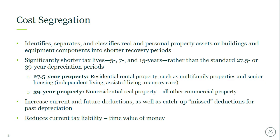Cost segregation studies are used to identify assets in a building that might qualify for shorter depreciable lives. They identify property that can be depreciated over 5, 7, or 15 years rather than the 27.5 years for residential property or 39 years for non-residential property. Five and seven year property would be Section 1245 property, whereas 15-year property would be exterior land improvements like parking lots, landscaping, sidewalks, or qualified improvement property. 27.5-year residential property would include multi-family property and senior housing. 39-year non-residential real property would essentially be all other commercial property. Cost segregation studies are done not only for acquisitions and newly constructed buildings, but are also great for tenant improvement projects, remodels, and expansions.